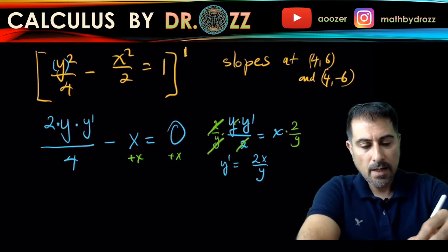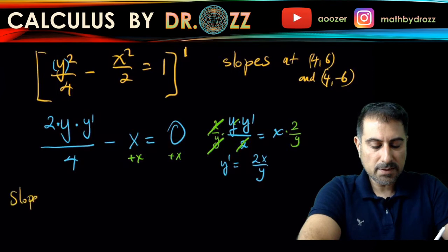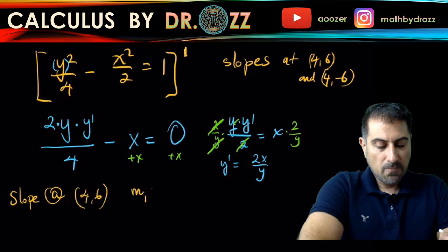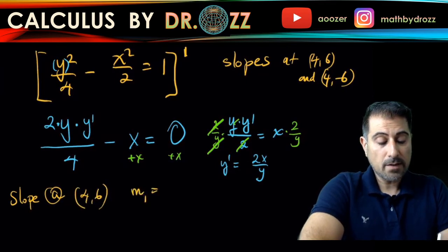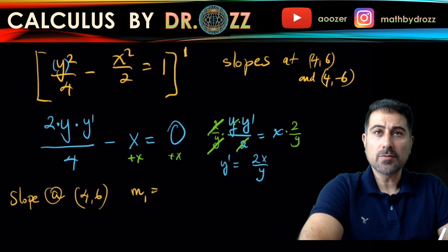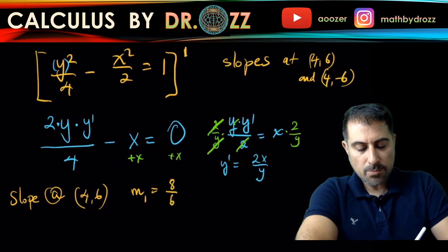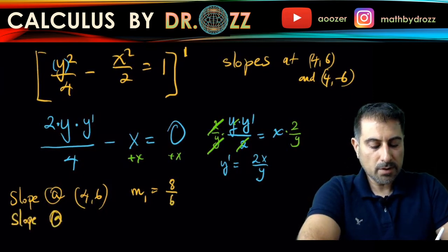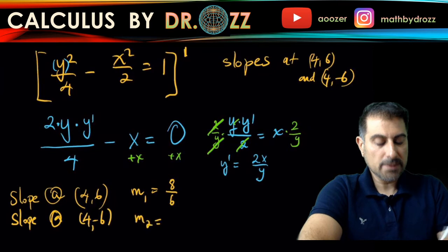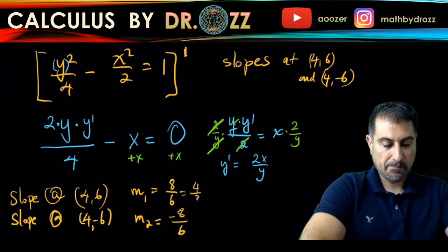Now I have the explicit form of y prime and can find the slopes. The slope at (4, 6), call it m1, is 2(4) over 6, which is 8 over 6, or 4 over 3. The slope at (4, -6), call it m2, is 2(4) over (-6), which is -8 over 6, or -4 over 3.